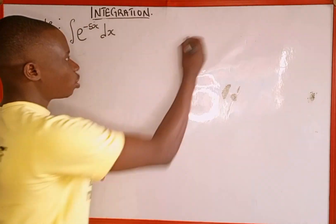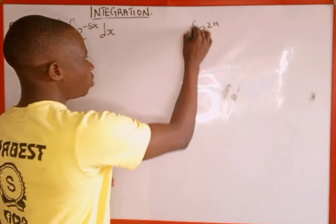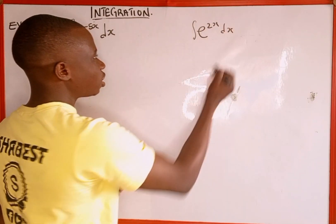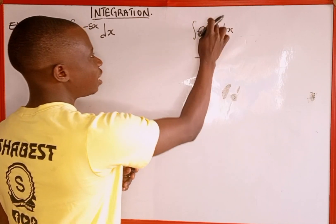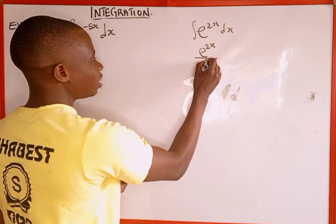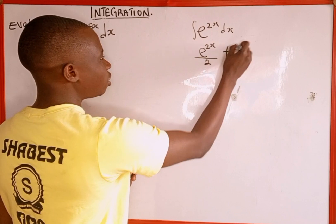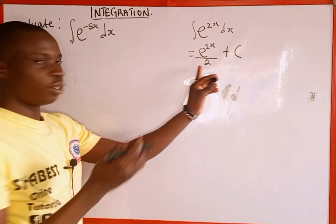For instance, when we have e^(2x) and we are integrating with respect to x, we write the function itself divided by the derivative of the index. If we differentiate 2x with respect to x, we get 2. So the result is e^(2x)/2 plus the integration constant. As simple as that.